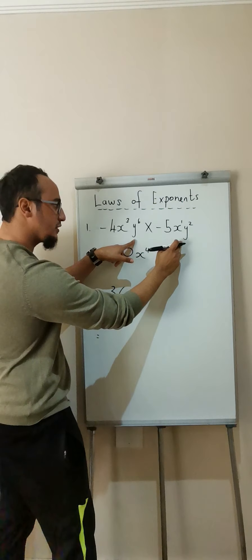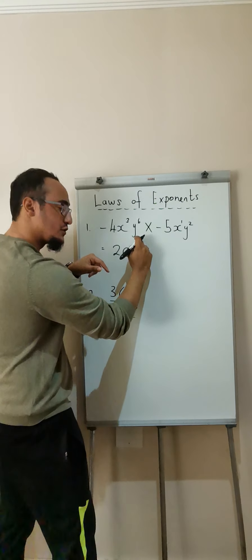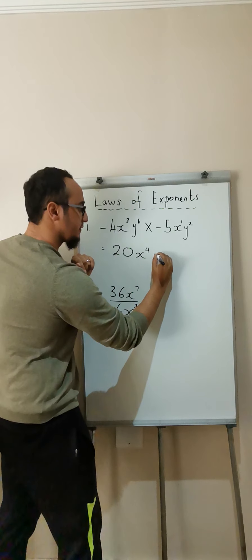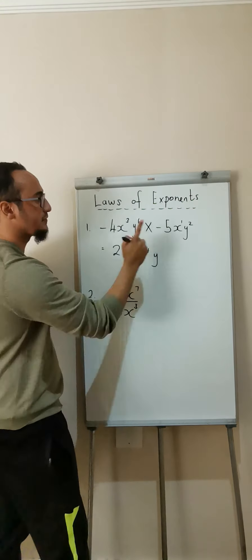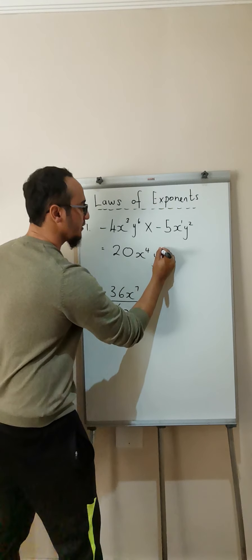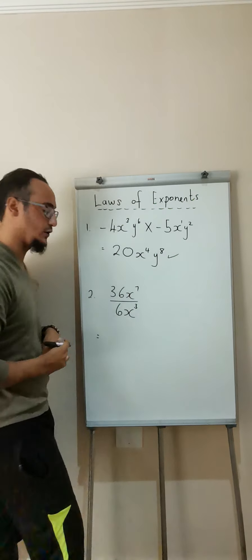The same thing happens with the y. y to the power of 6, multiplied by y squared. Because I'm multiplying and I have the same base, what happens to the exponents? They add. And that will be my answer.